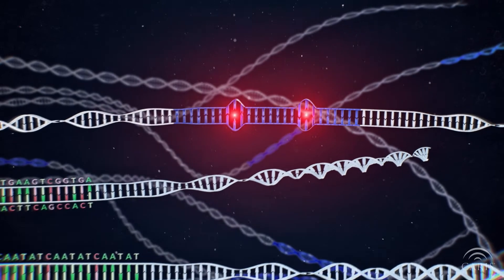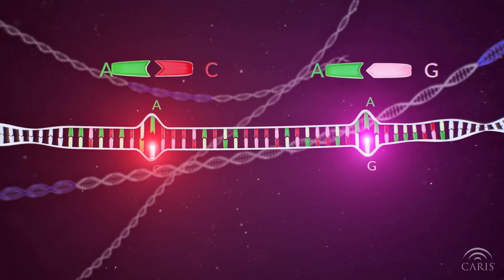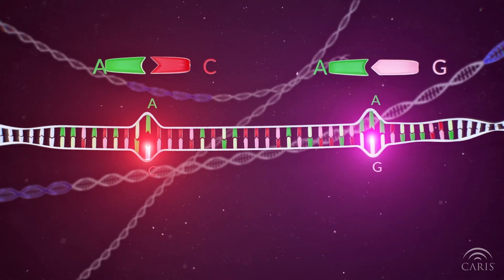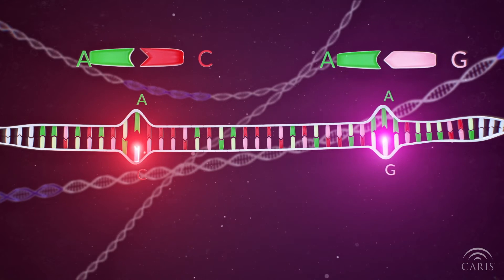Sometimes the bases are matched incorrectly during duplication. For example, adenine is paired with cytosine or guanine instead of thymine. This can happen if the two DNA strands become misaligned.